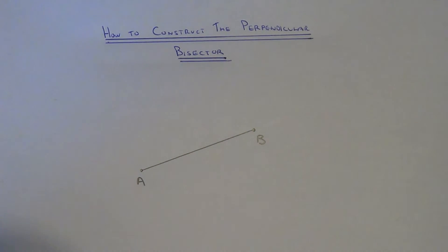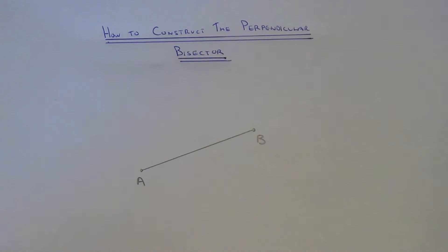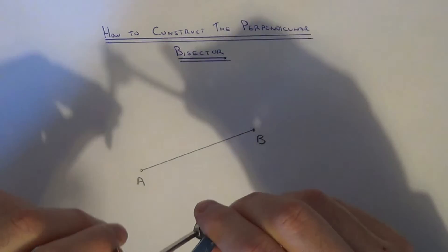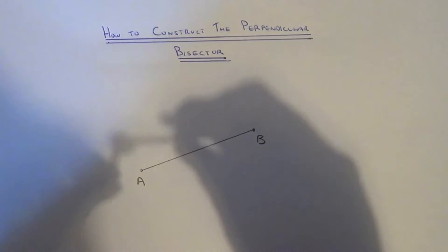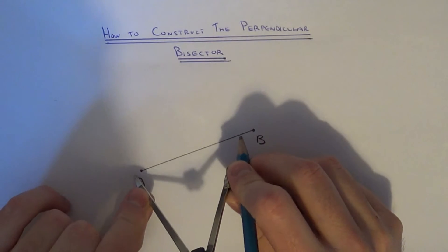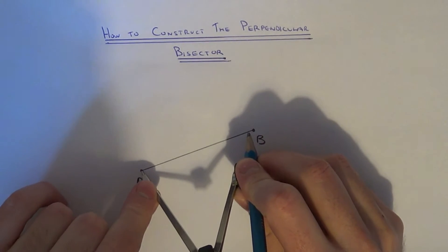Today I'm going to show you how to construct the perpendicular bisector of a line segment AB. First of all, open your compass to about three quarters the length of AB.